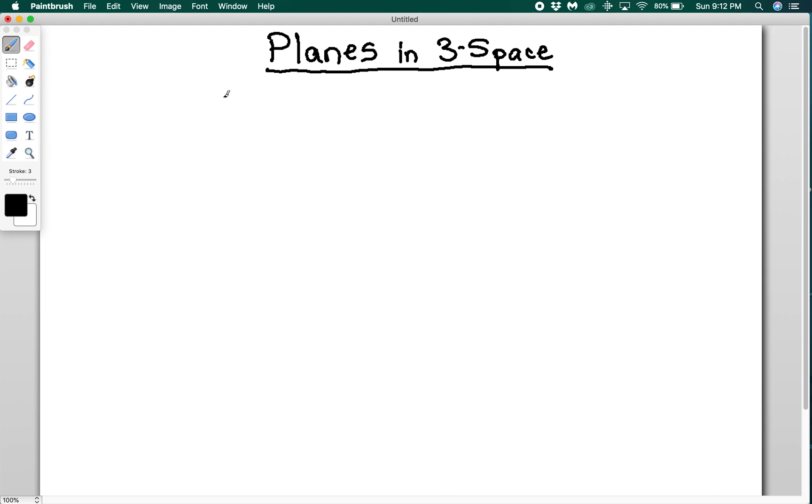A plane is essentially a sheet that's floating out in 3-space somewhere. It extends infinitely in all directions. So if I have some plane like this, try to draw three-dimensionally here. This really keeps on going in all directions, it extends forever to infinity.